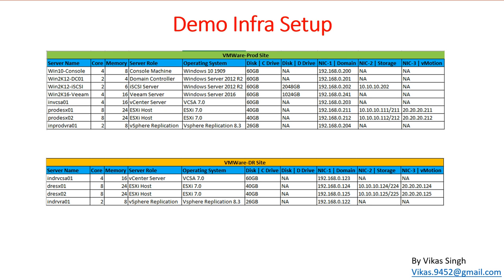In this demo environment, the production site has a domain controller, an iSCSI server, a Veeam backup server, a VCSA appliance running vCenter 7, and two ESXi 7 hosts. We are going to configure vSphere Replication version 8.3 on the production side. On the DR side, we have two ESXi hosts with one vCenter Server also running VCSA 7, and we are going to deploy the vSphere Replication appliance there as well.